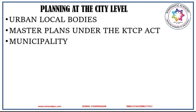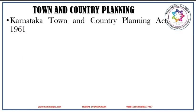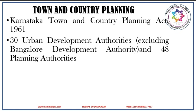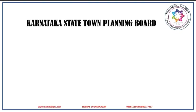Now let us study about town and country planning. Preparation of master plans is essential for the orderly development of cities, towns and villages in the state. The Karnataka Town and Country Planning Act 1961 has been extended to 157 urban centers in the state so far, and statutory authorities have been constituted in these urban centers by declaring local planning areas. Accordingly, 30 urban development authorities excluding Bengaluru Development Authority and 48 planning authorities are functioning in the state. All these authorities get technical assistance from the Karnataka State Town Planning Board.